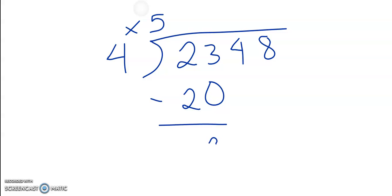That's the closest we can get to 23. If we bring this 4 down we'll have 34 and 4 times 8 is 32. That's the closest we can get to 34.